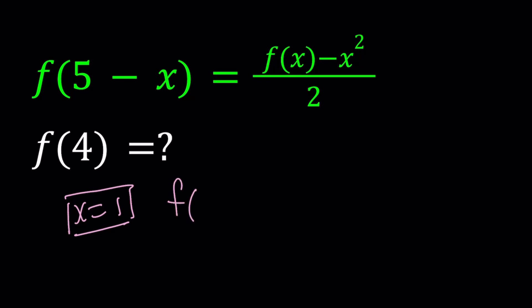In that case, we're going to find f of 4 equals f of 1 minus 1 squared divided by 2. Even though this gave us f of 4, we also got another variable which is f of 1 at this point. So we need to do something for that.